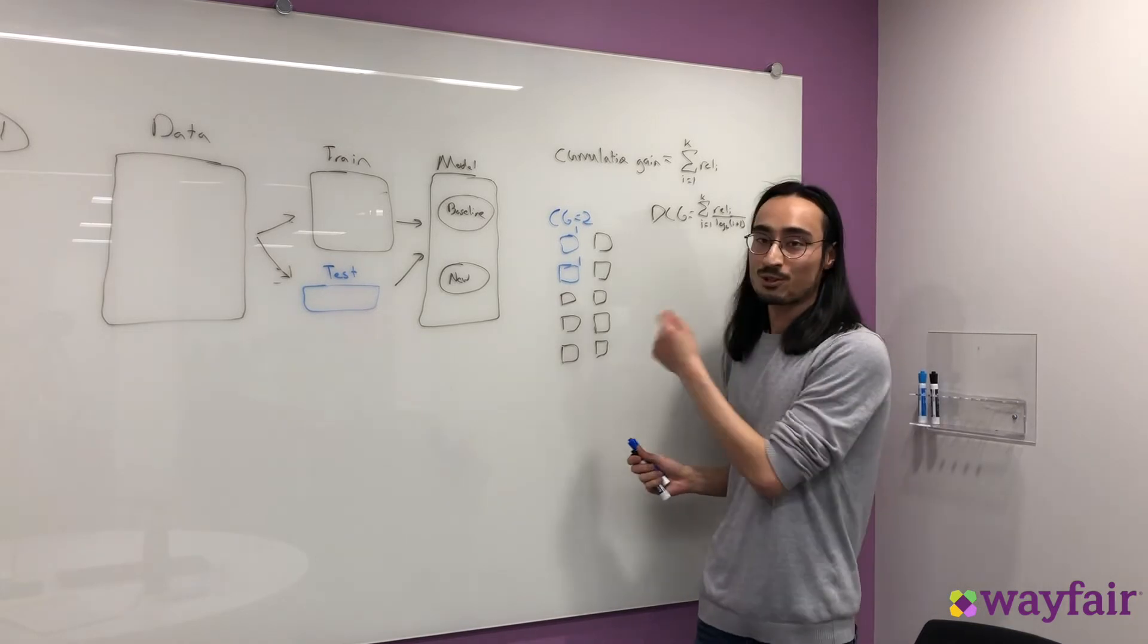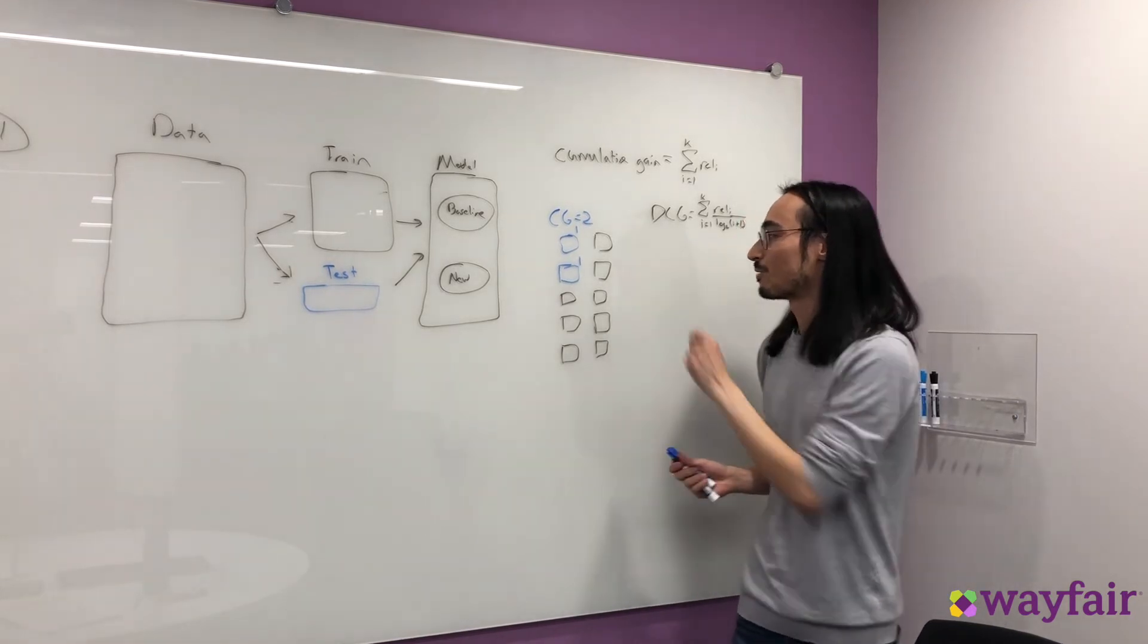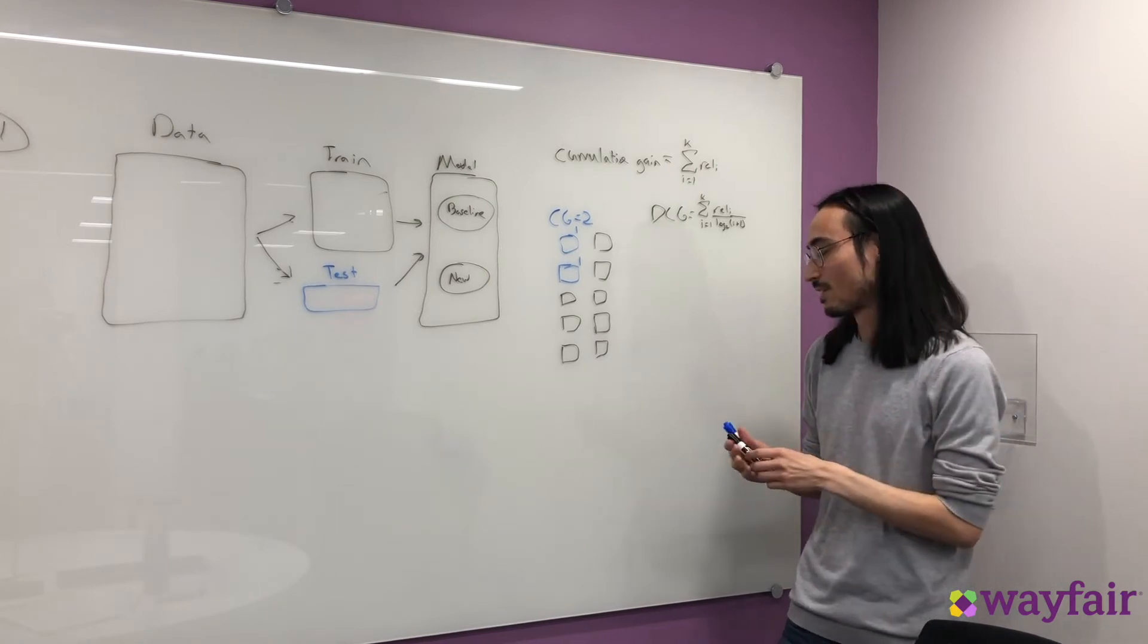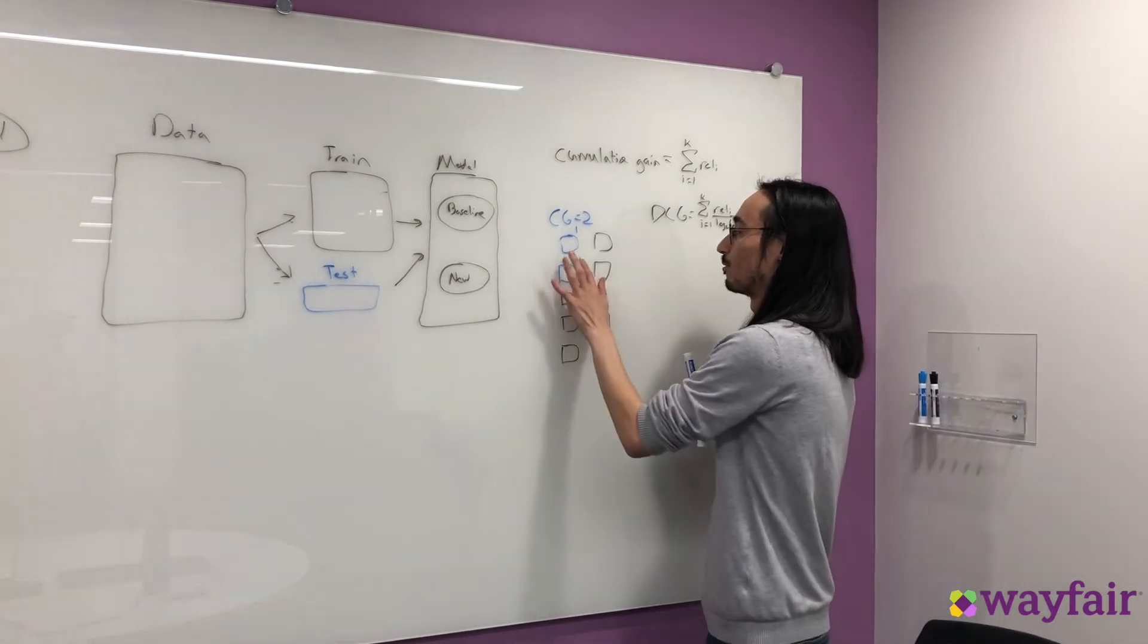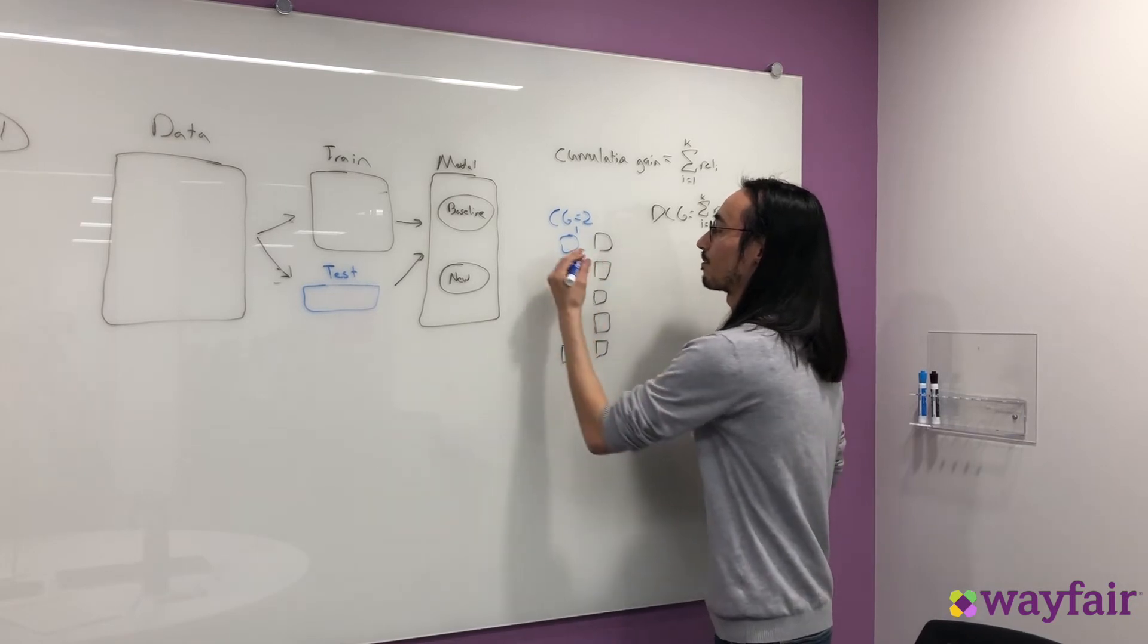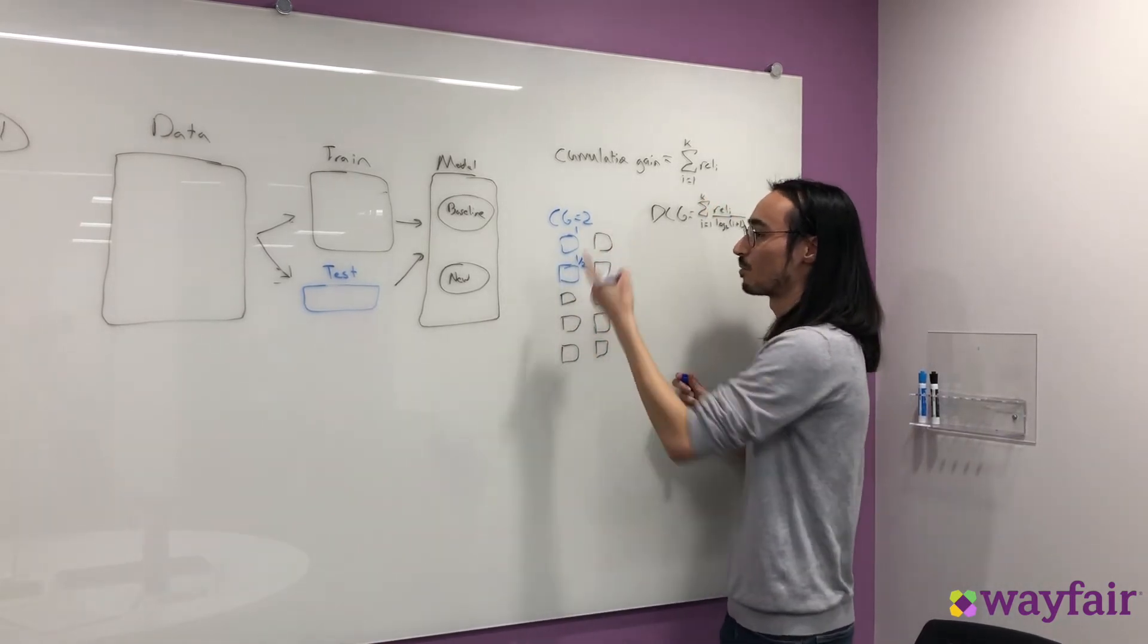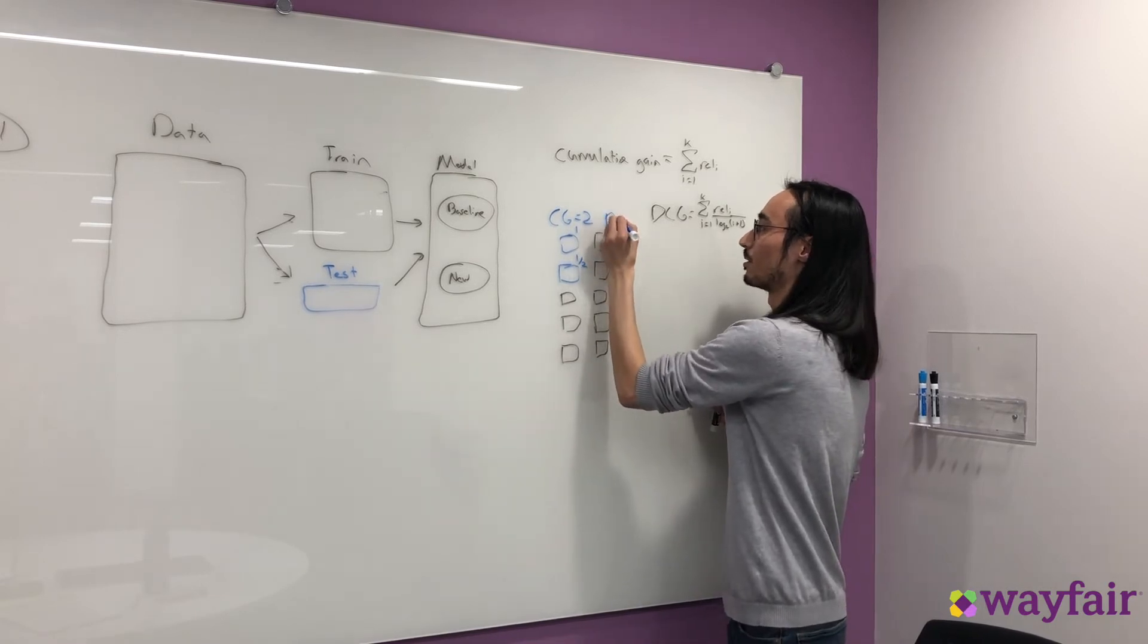However, the relevance score at position 3, we now have a reduction factor of 2, because base 2 log of 4 equals 2. So now this causes the relevance score to be reduced in half, so it's 1 over 2. And that means when we sum all these relevance scores up, we get DCG equal to 1.5.